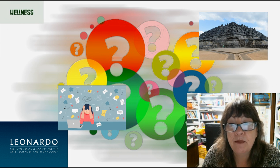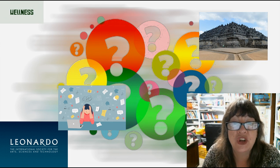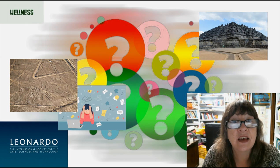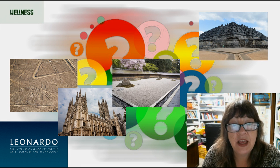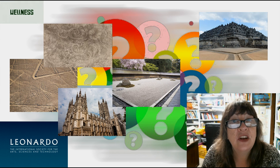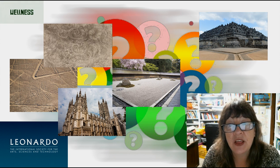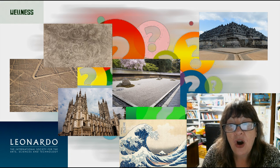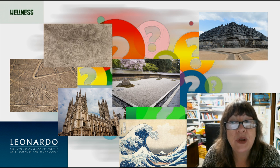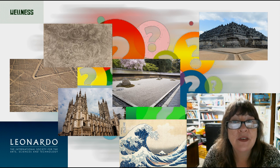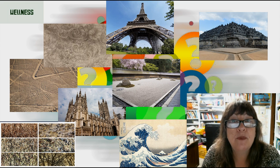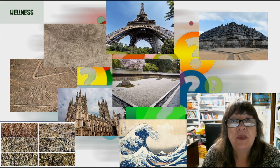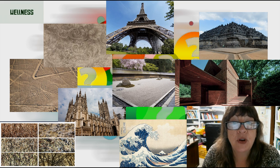It seems there has been an abundance of fractal stress reducers throughout history — for example, the 8th century Temple of Borobudur in Java, the Nazca Lines in Peru, Gothic Cathedrals, the Ryoanji Rock Garden in Japan, Leonardo da Vinci's sketch The Deluge, Hokusai's woodcut print The Great Wave, Eiffel's Tower in Paris, Pollock's early poured paintings, and Lloyd Wright's Palmer House.